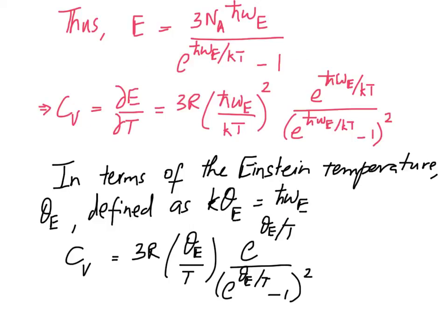What Einstein was able to show was that by properly choosing this one parameter, the Einstein temperature, he was able to get a good fit to the specific heat data that was available for diamond across a wide range of temperatures, which is what I'm going to show right now.